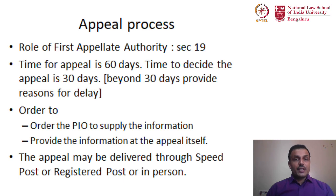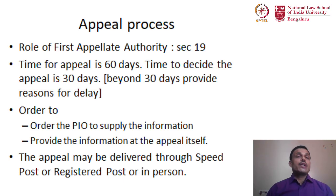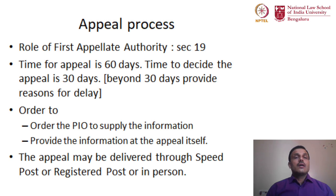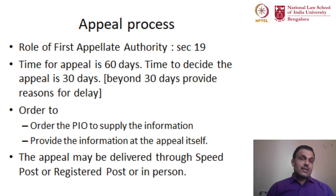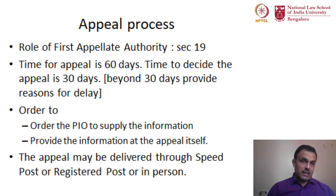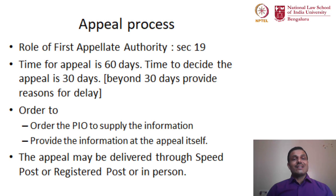The First Appellate Authority is discussed under Section 19 of the RTI Act. Any citizen or third party aggrieved by the order of the Public Information Officer can prefer an appeal to the First Appellate Authority within 60 days of receiving the PIO's order. This is the limitation time fixed under the Act. If the citizen does not reach the First Appellate Authority within 60 days, his right to appeal is exhausted.